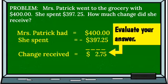So we have solved the problem. Now we're going to evaluate. We have solved by using subtraction. Here's the subtraction sign next to the $397.25. When we worked it, we got $2.75 as the change received.